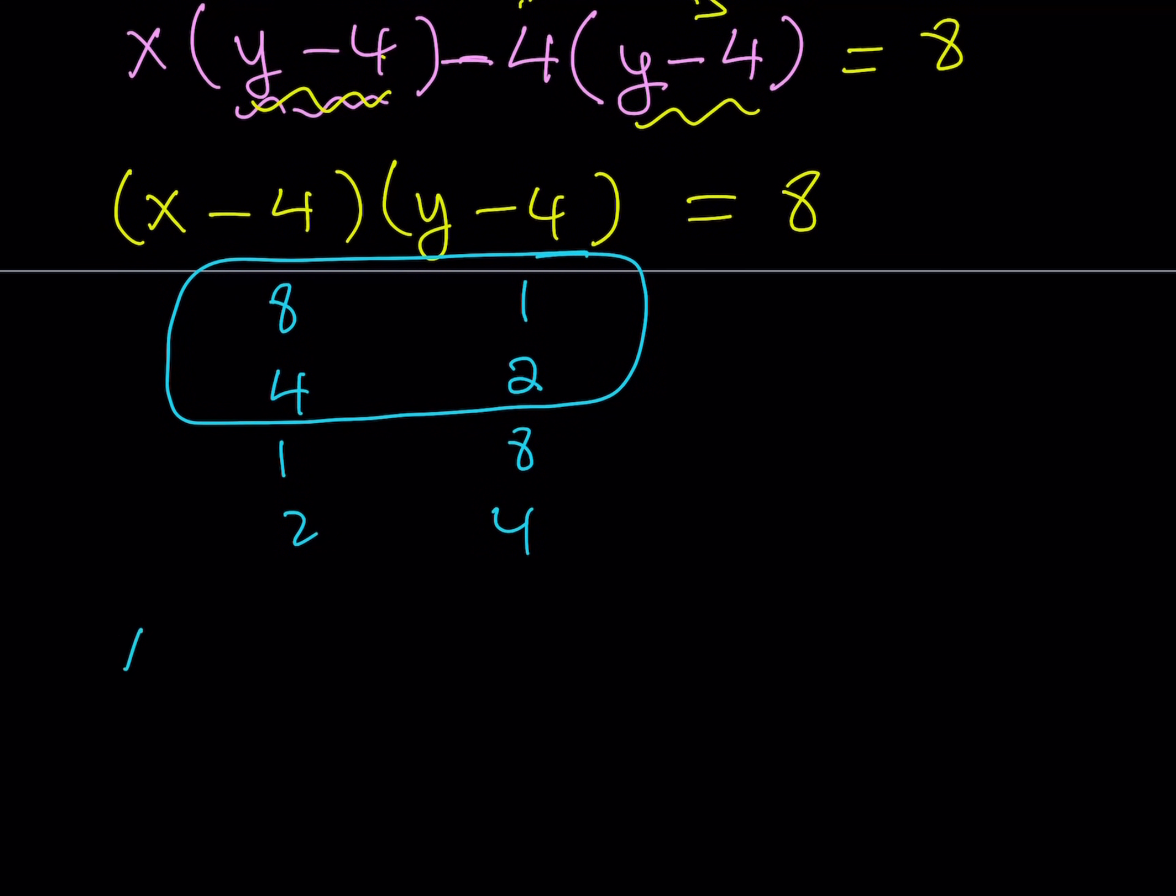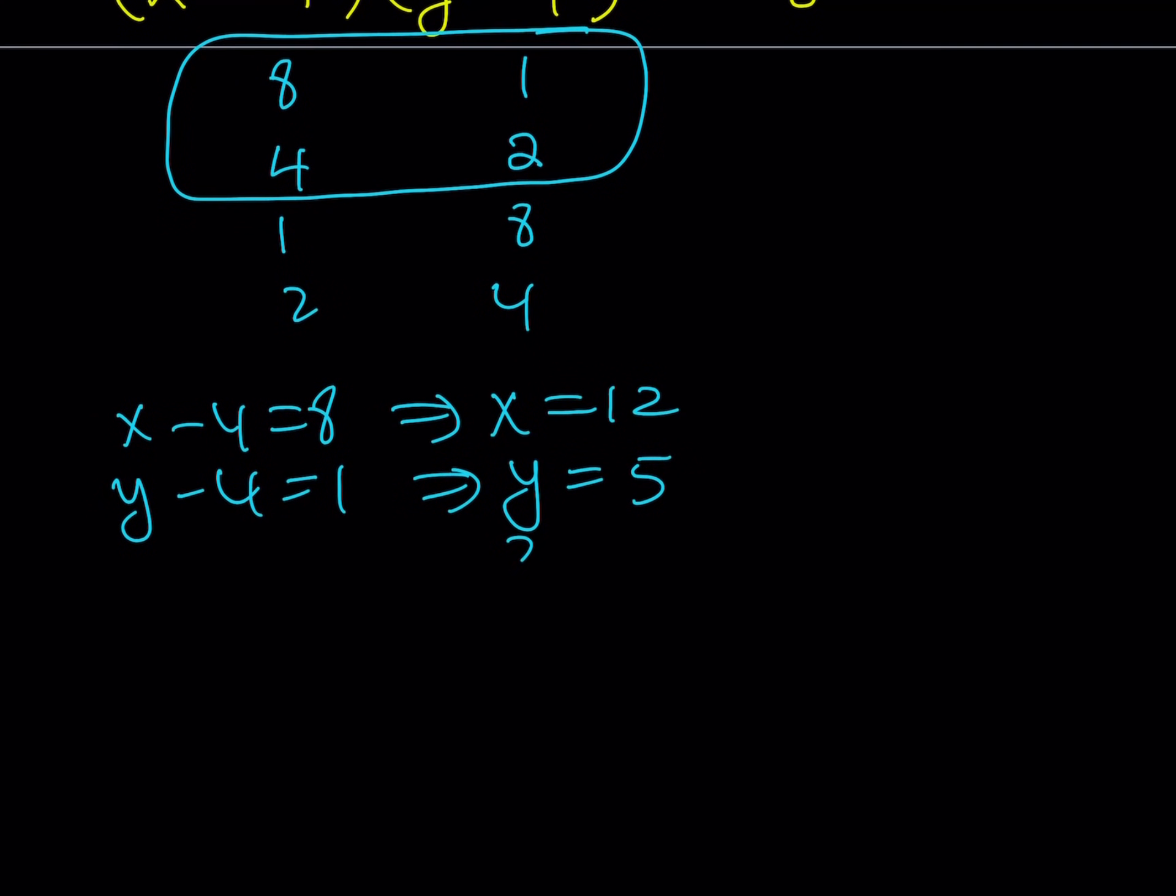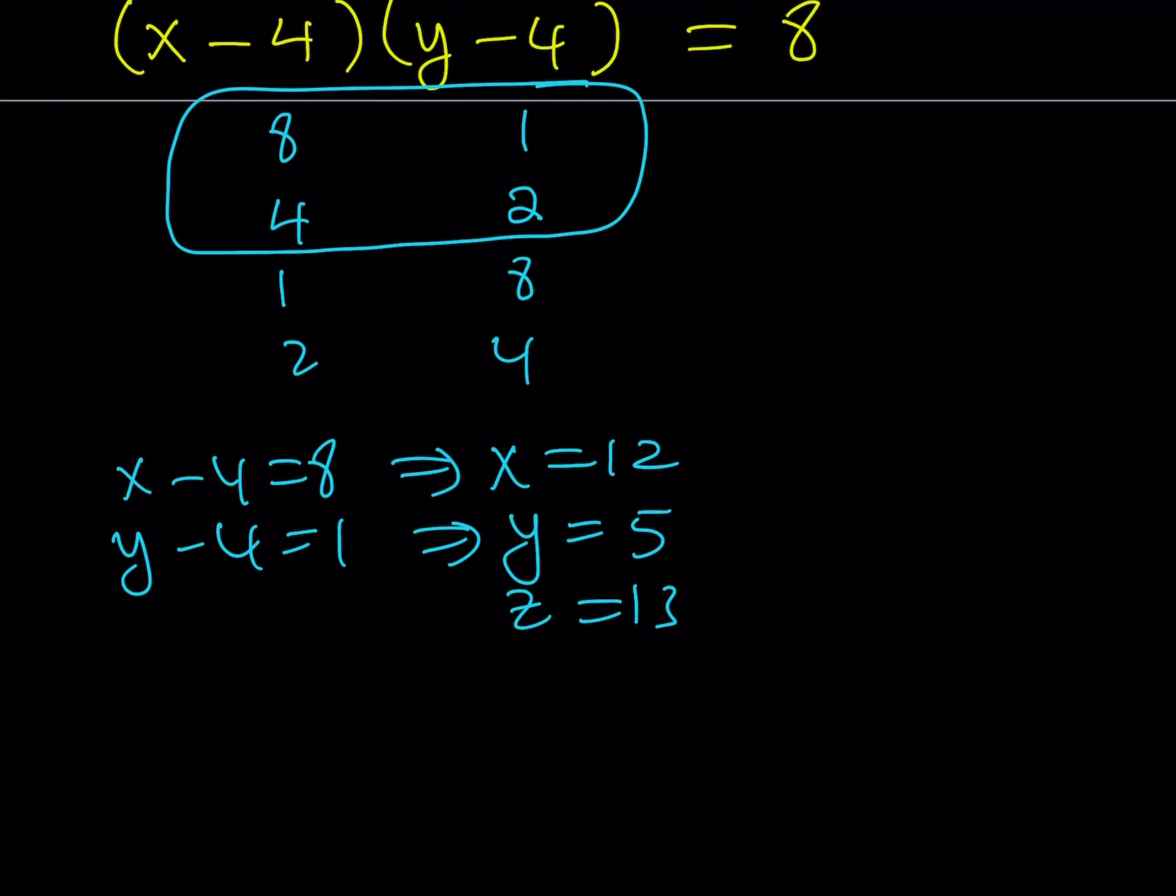The first one gives me x minus four is equal to eight, which means from here, x is equal to 12. Y minus four is equal to one gives me y is equal to five. And of course, this is a right triangle. So z must be 13. So that gives me one of the solutions. Let's go ahead and look at the other solution and see what that gives us.